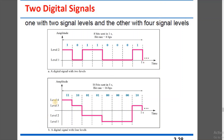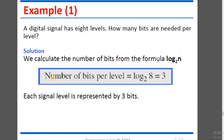For four signal levels — level 1, 2, 3, and 4 — we have 2 bits of data per level. The combinations are: 00, 01, 10, and 11. Level 1 means 00, level 2 means 01 with a corresponding voltage, level 3 means 10, and level 4 means 11, each assigned a different voltage.